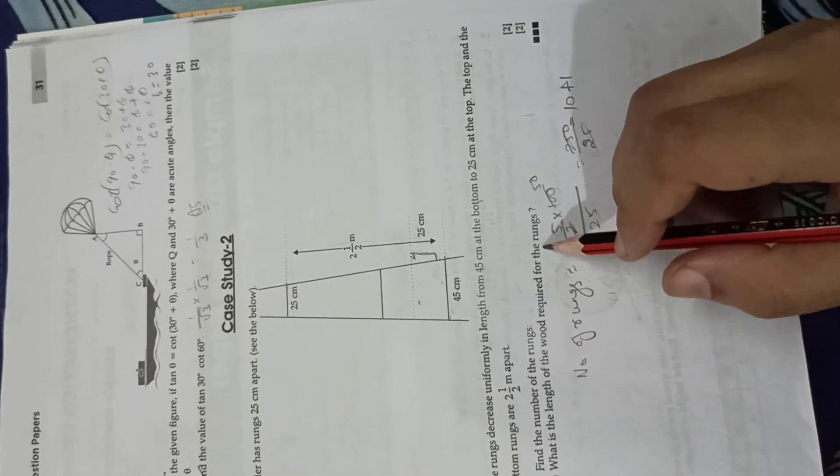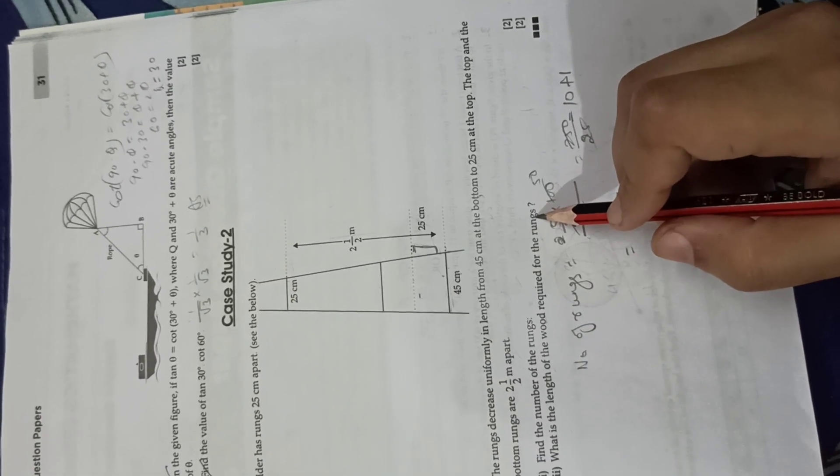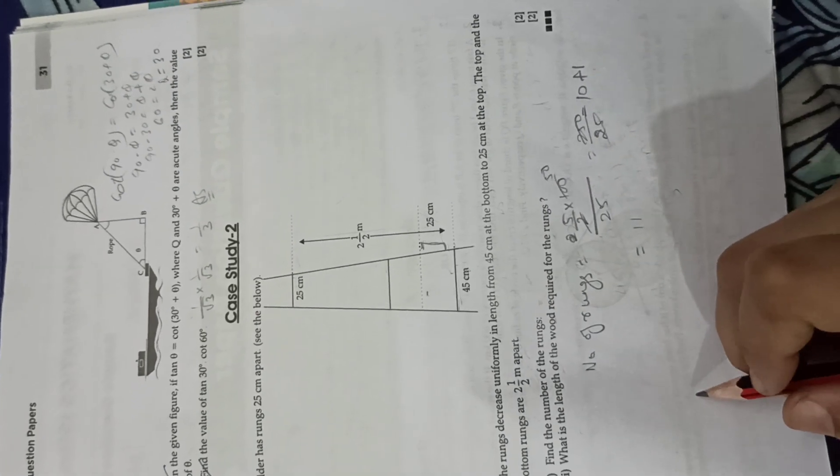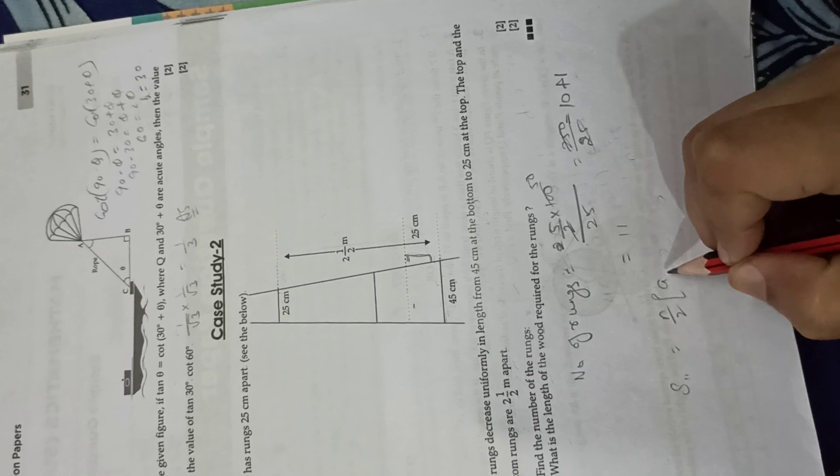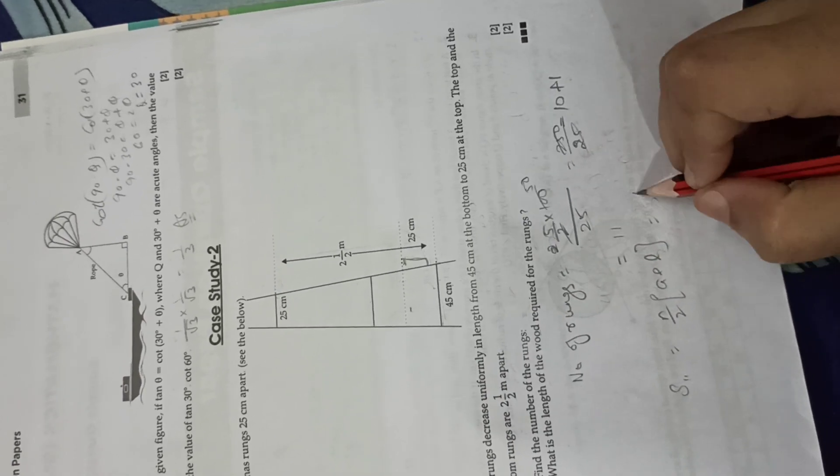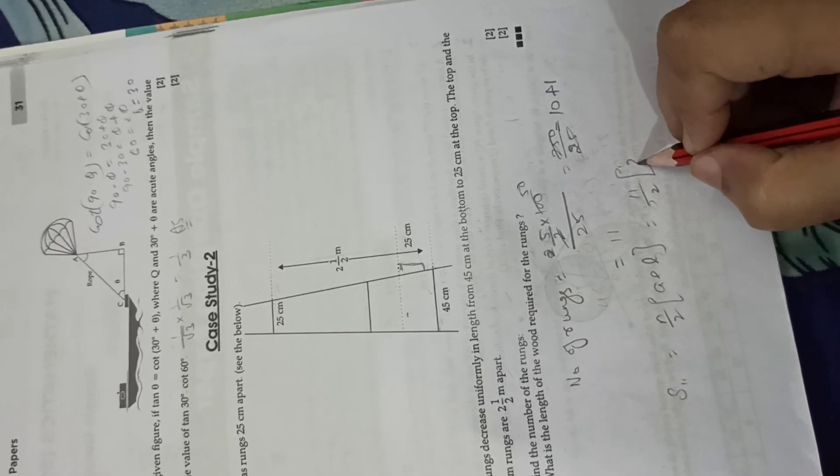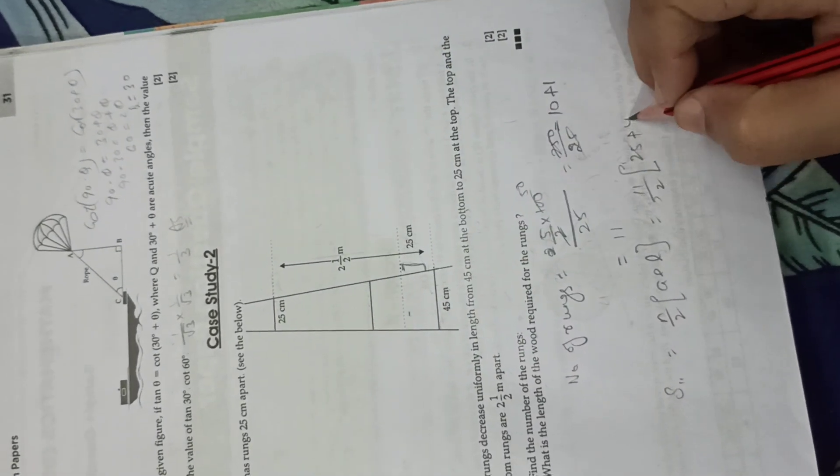What is the length of the wood required for the rungs? We will use the arithmetic progression formula: sum equals n by 2 times a plus l. N is 11 by 2, a is 25 and l is 45.